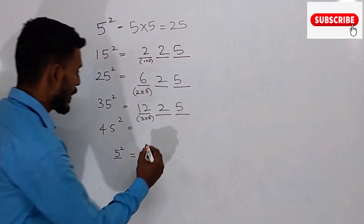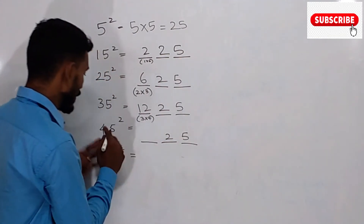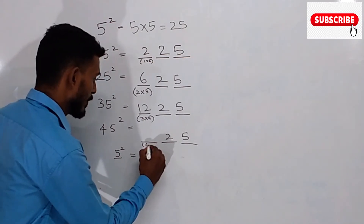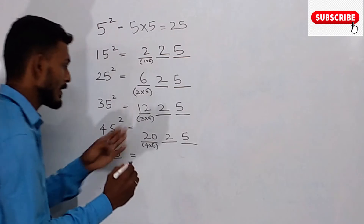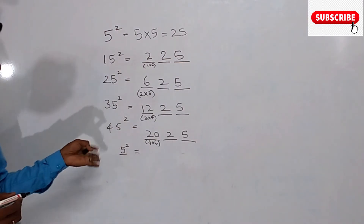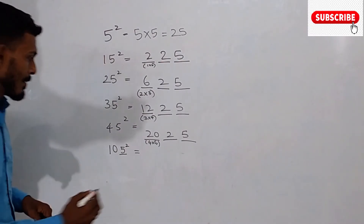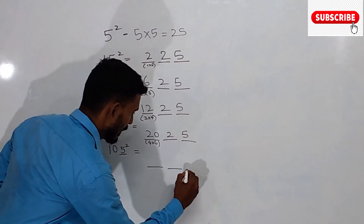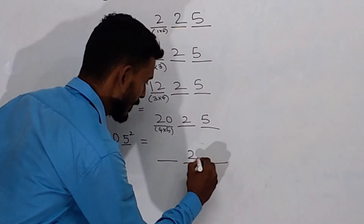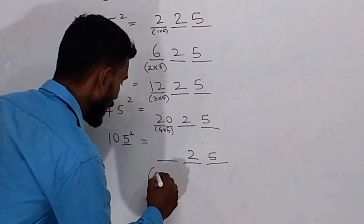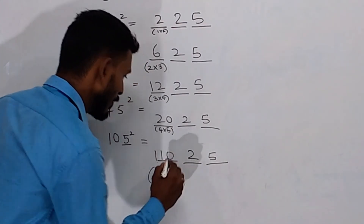45 square: 25 is 5, 4 into 5 is 20, so 20 is 25. For example, 5 square is 25. That is the value of 25. 10 into 11 is 110, giving 11025.